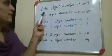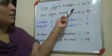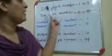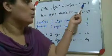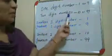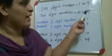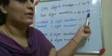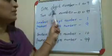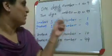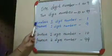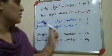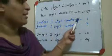1-digit number, please listen. 2-digit number: 10 to 99. Smallest 1-digit number is 1.